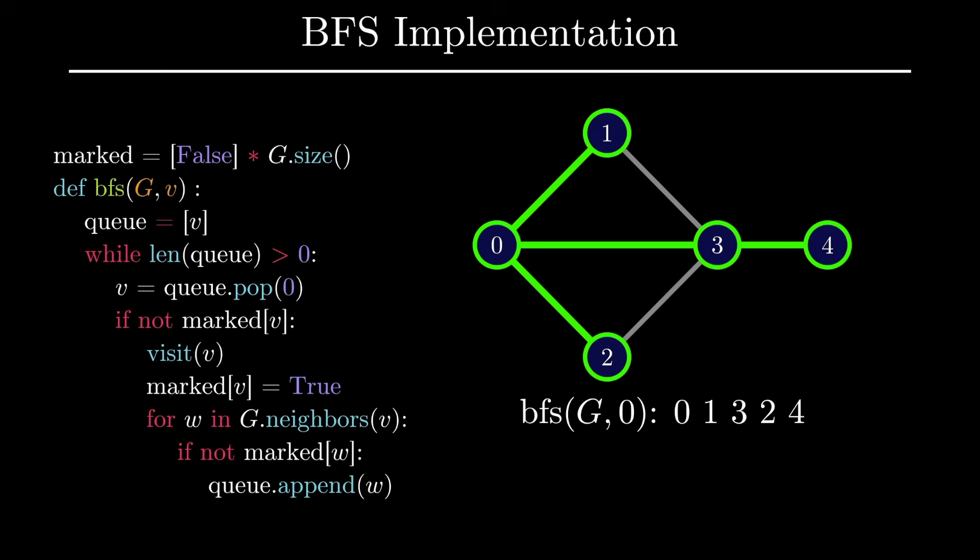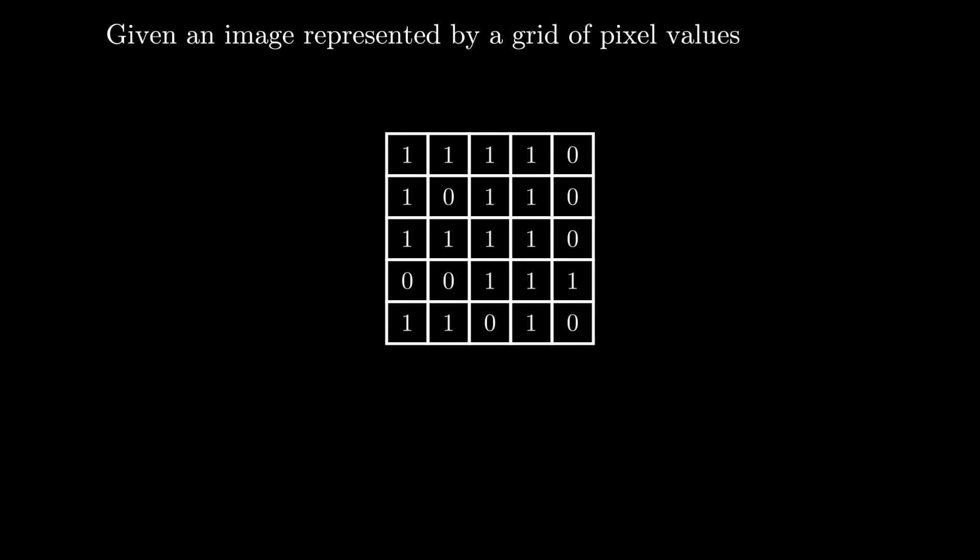Now that we've seen the implementation, let's take a look at a real-world problem. Suppose we were given an image represented by a grid of pixel values. Let's assume that these pixel values are just integers for simplicity. We are then given a starting pixel location as a row and column in the grid, and a new pixel value p.